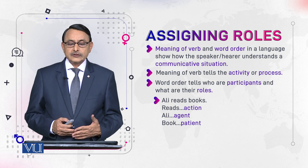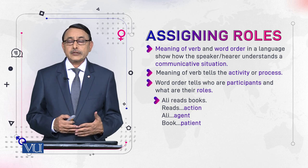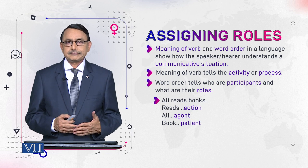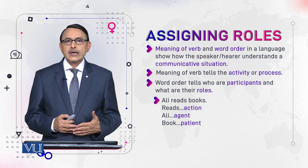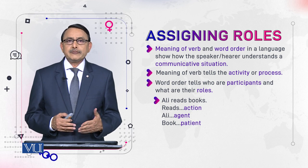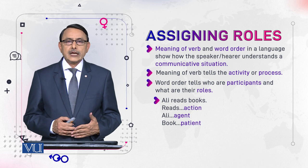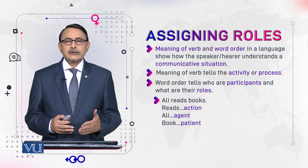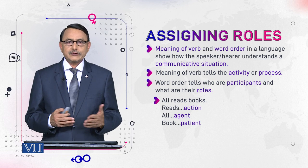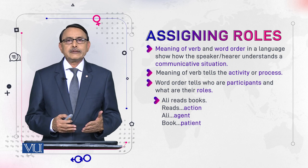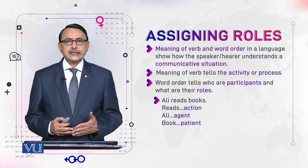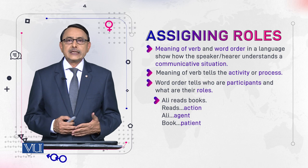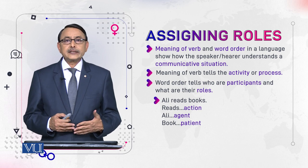Word order is determined by the meaning of the verb. The verb decides what will come before it and what will come after it. This is word order, and word meaning means its semantics.